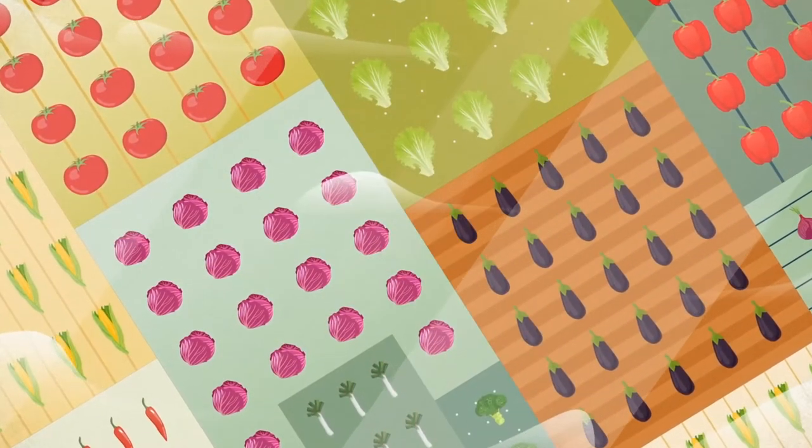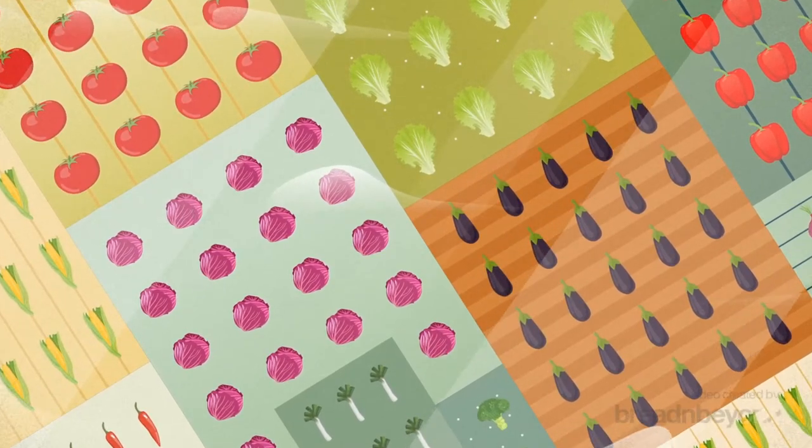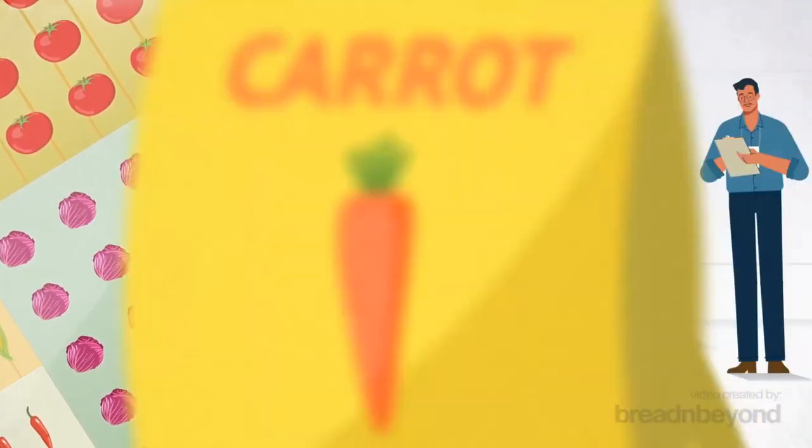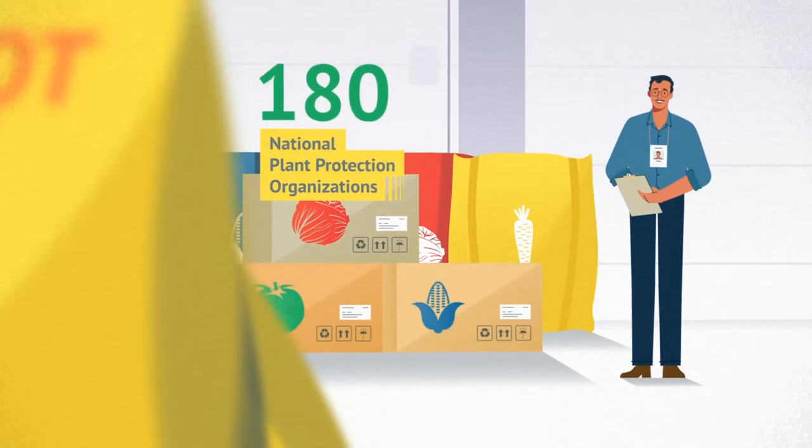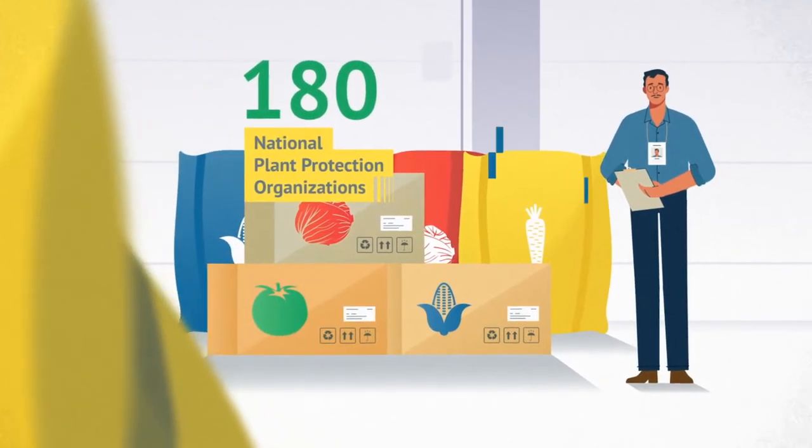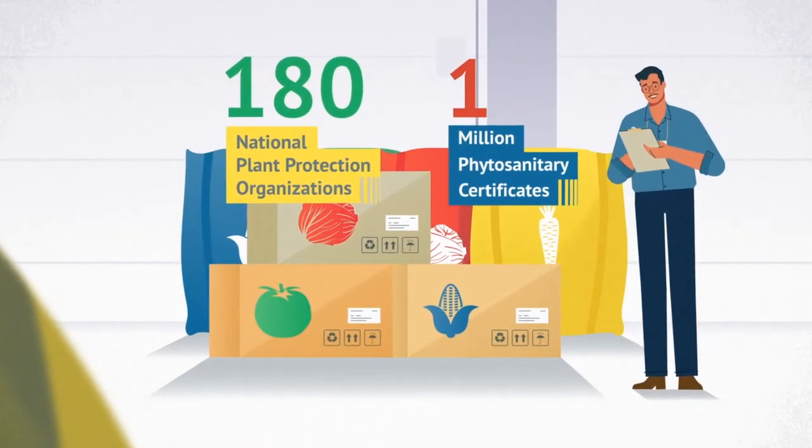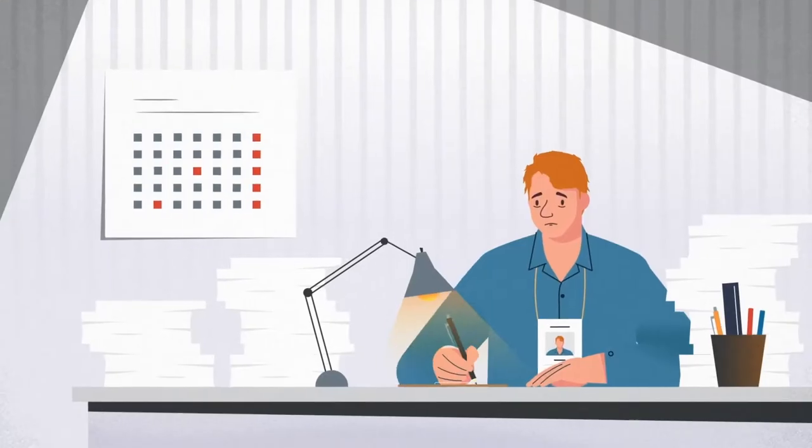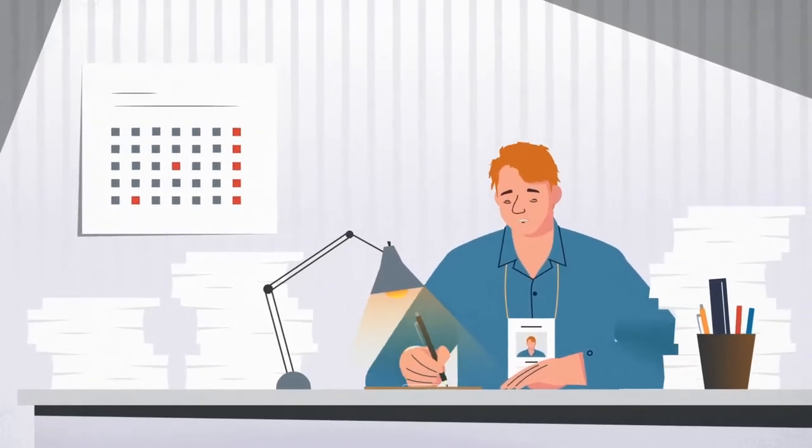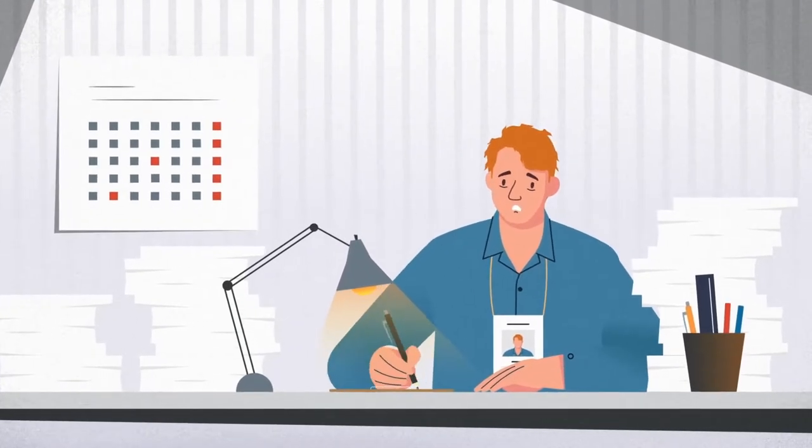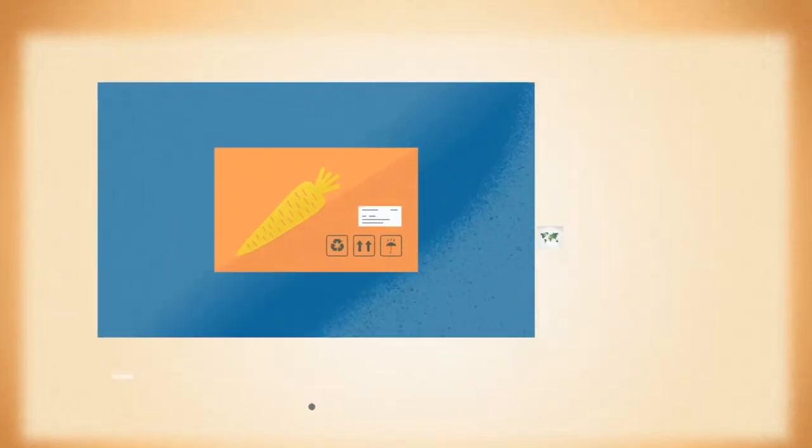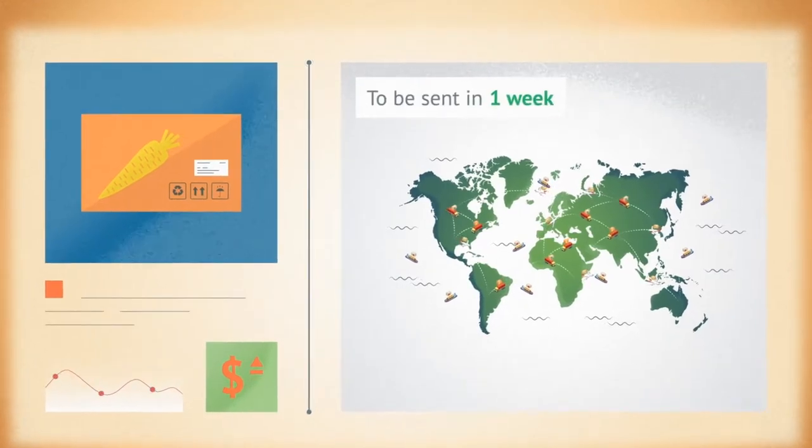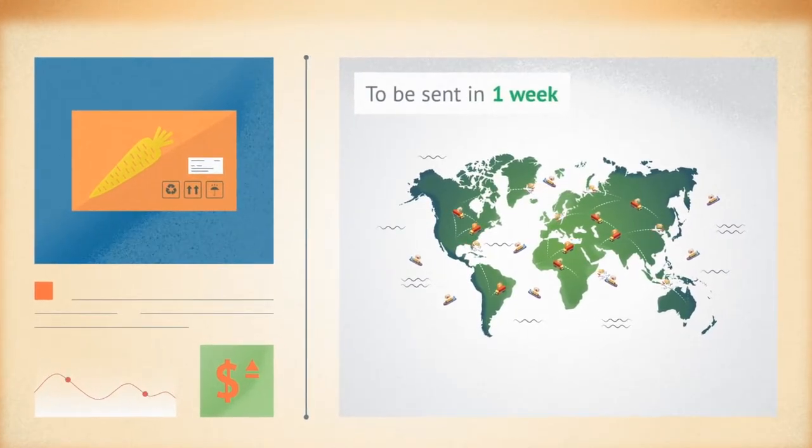There are currently more than 300 types of seed commodities shipped internationally, with approximately 180 NPPOs deployed to certify shipments and a million phytosanitary certificates exchanged between exporting and importing countries yearly. This places increasing pressure on the National Plant Protection Organization's limited resources and significantly adds to the costs for, and impacts the ability of, seed companies to get seed to farmers when they need it.